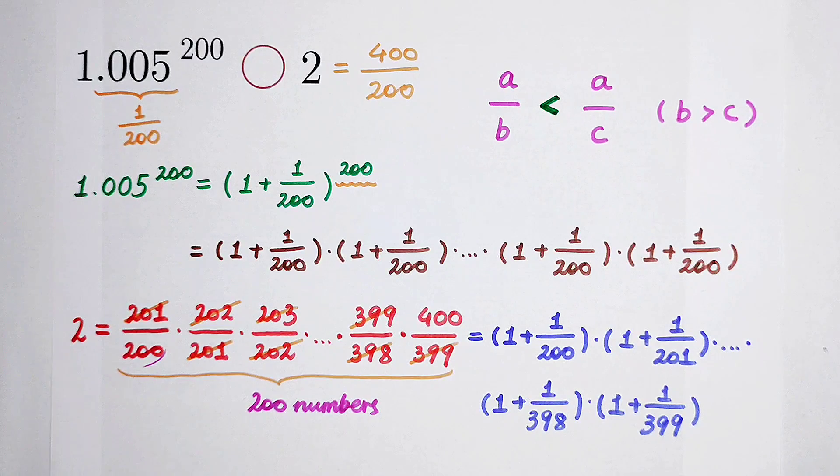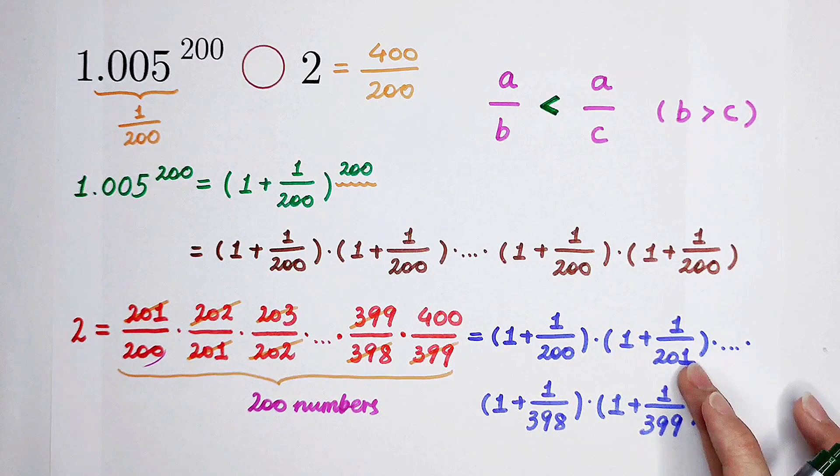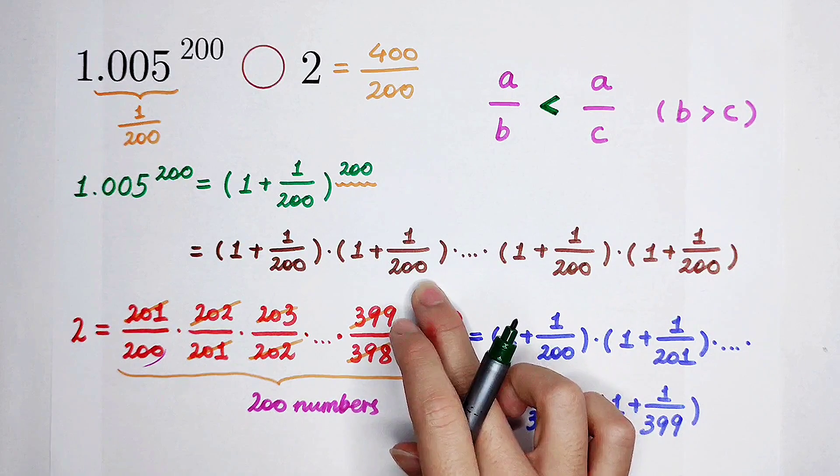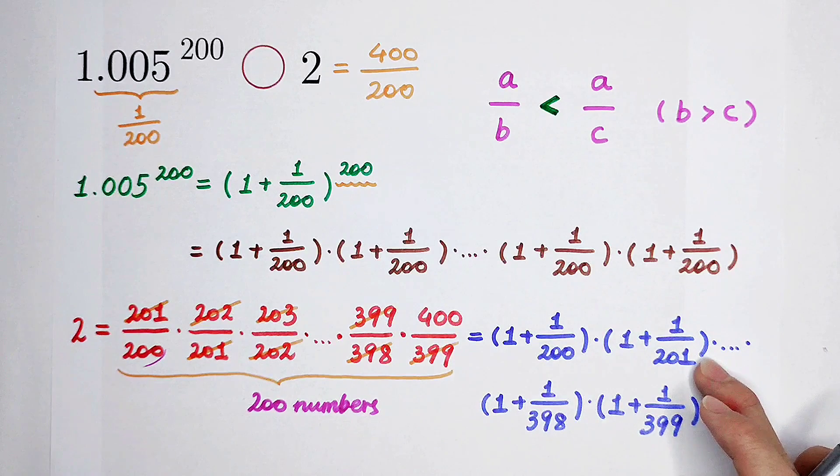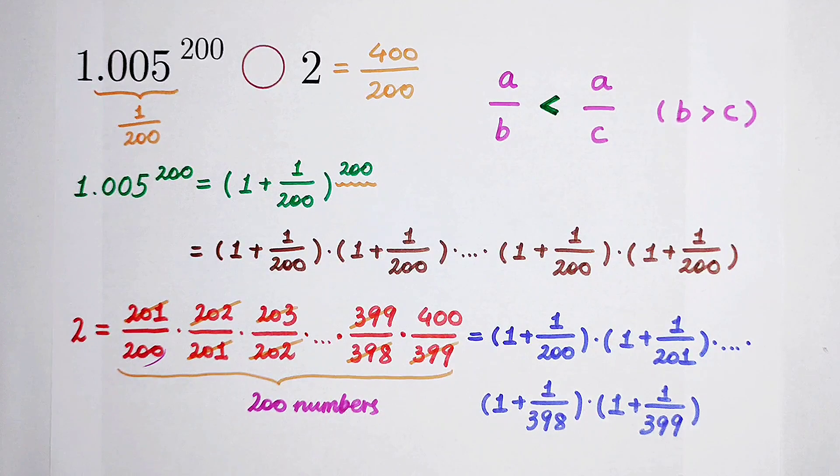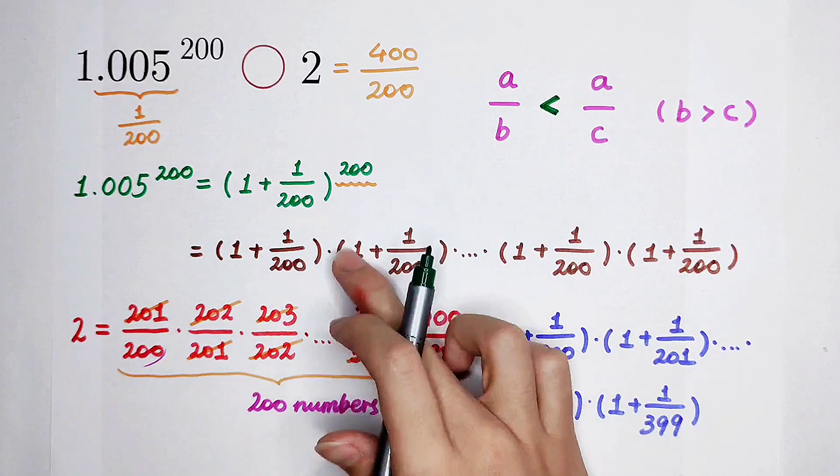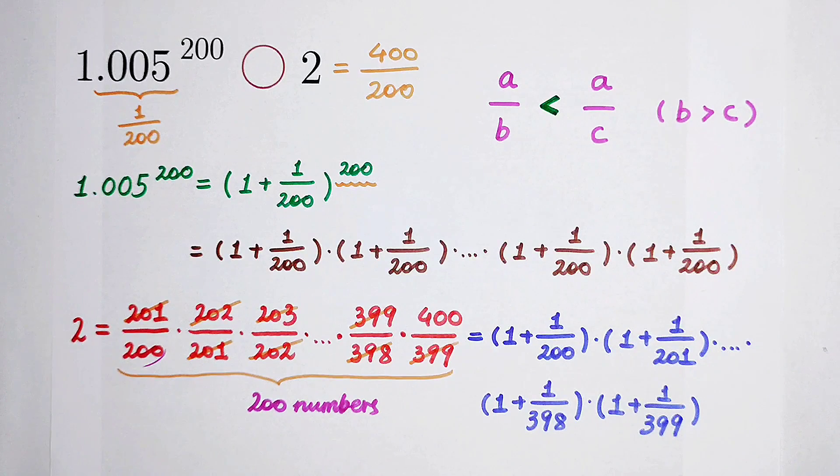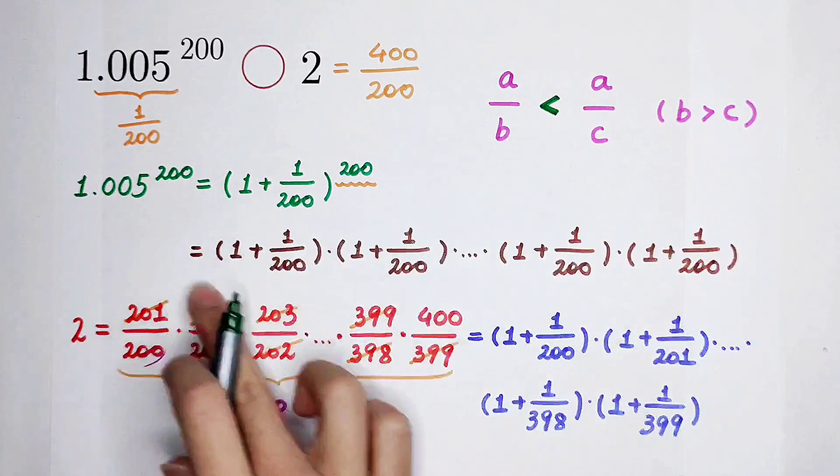1 over 200 is always bigger than 1 over 201, also always bigger than 1 over 202, until 399. And in every factor, there is plus 1. That means, this one is always bigger than this one.